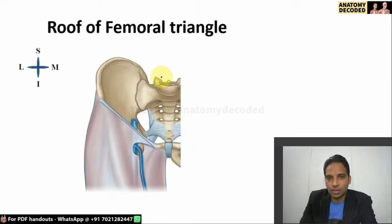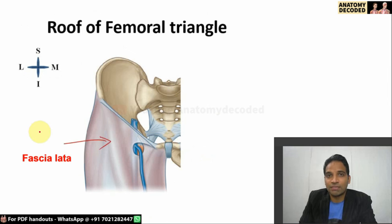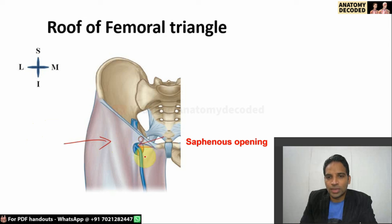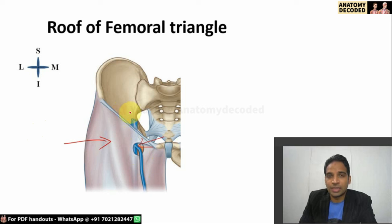The roof of the femoral triangle, as in any other region in anatomy, is formed by skin, superficial fascia, and deep fascia. The deep fascia in the thigh is referred to as fascia lata, and it has an opening referred to as the saphenous opening, through which the great saphenous vein drains into the femoral vein.